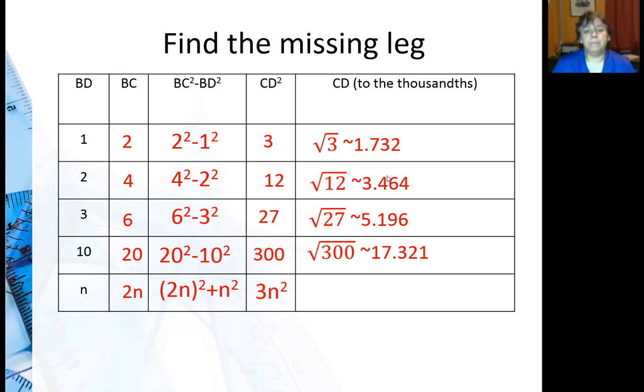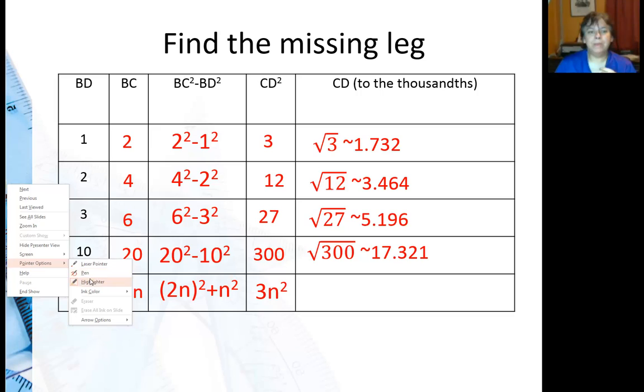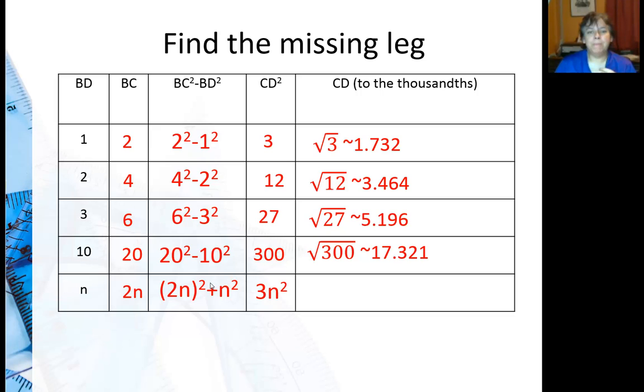And then we've got this last one. 2n squared plus n squared. That's actually going to be 3n squared. And part of the reason is that 2 is squared also, so that's 4n squared. And that should be a minus. Let me go ahead and change that. This should be a minus, not a plus. So 2n squared minus n squared is 3n squared.